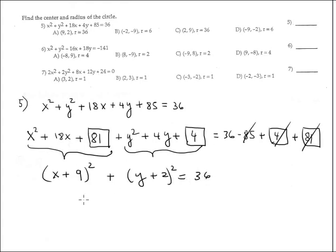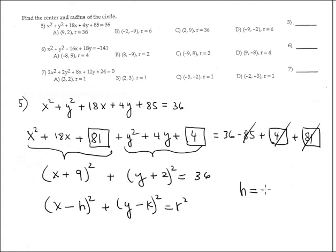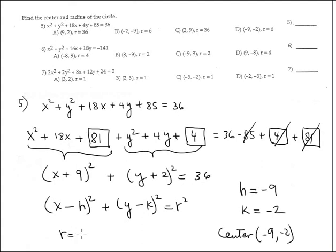The center — compare this equation to the standard form of the circle equation. H is negative 9 (completely opposite sign, because negative 9 produces a positive here). And K is likewise negative 2. So the center is located at the point (−9, −2). The radius r is the square root of 36, which is 6. This is the answer, option D.